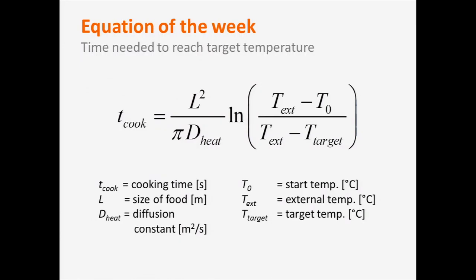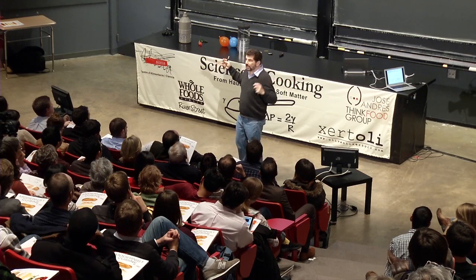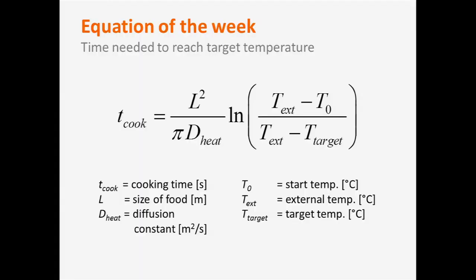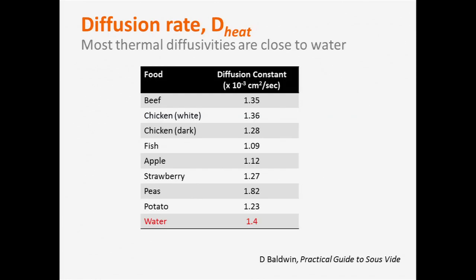This equation tells us how long to cook the turkey. It depends on what temperature we want to cook it to, the starting temperature, the oven temperature, and the diffusion coefficient. This diffusion coefficient describes how heat diffuses through food, and we can look up a list of measured diffusion constants from a practical guide to sous vide cooking.